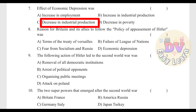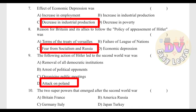Question 8: Reason for Britain and its allies to follow the policy of appeasement of Hitler — Answer: Fear from socialism and Russia. Question 9: The action of Hitler that led to the Second World War — Answer: Attack on Poland. Question 10: The two superpowers that emerged after the Second World War — Answer: America and Russia.